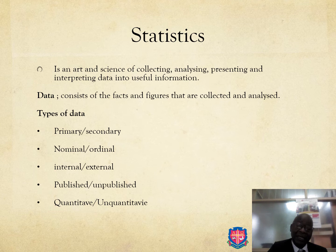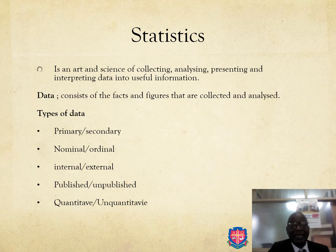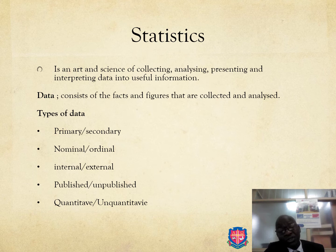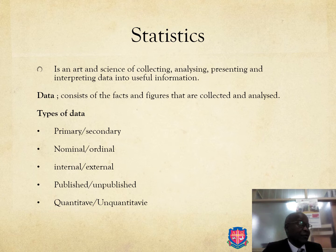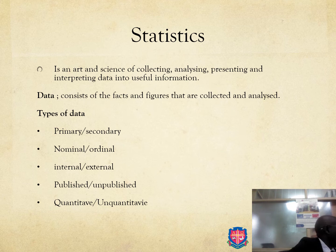So we are talking about data. Data consists of facts and figures that are collected and analyzed — that's when facts become data. Types of data include: primary versus secondary, nominal versus ordinal, interval versus external, published versus unpublished, and quantitative versus qualitative.